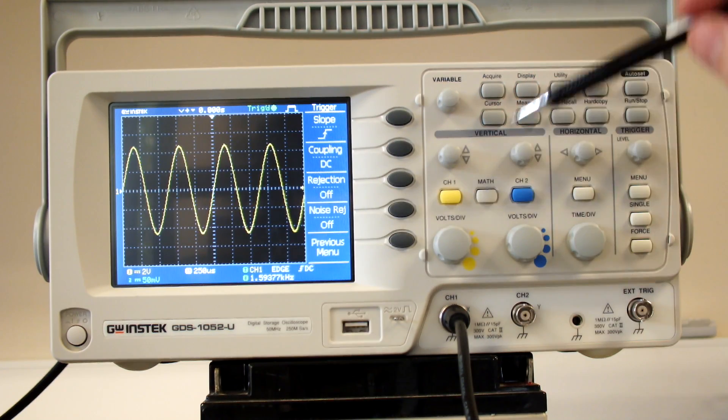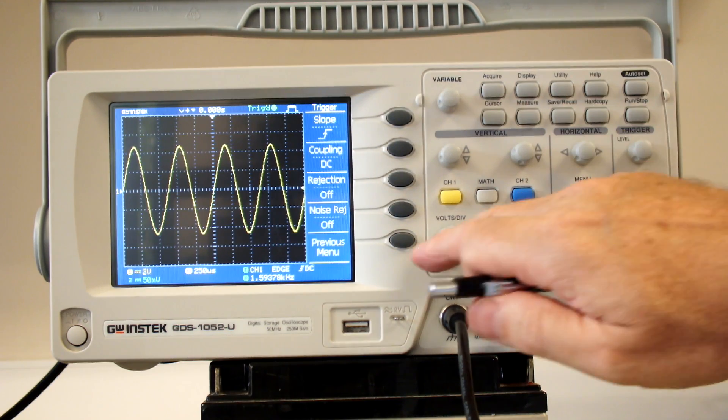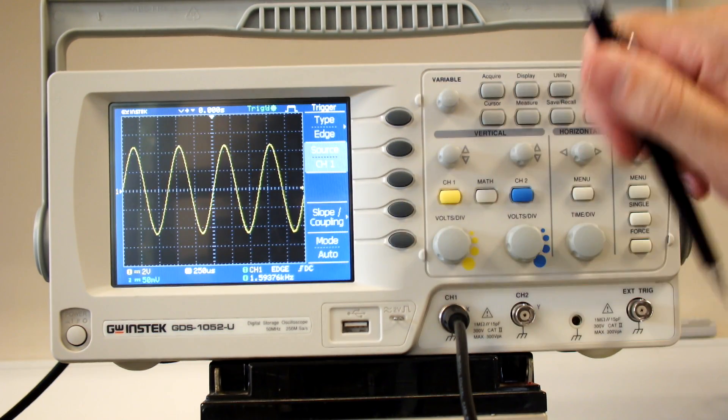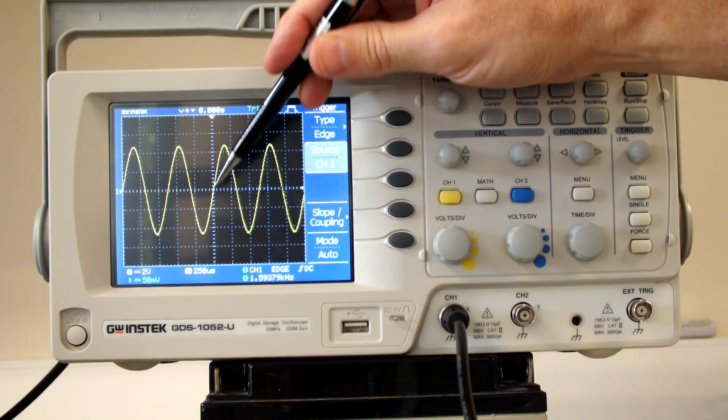If I say slope coupling, it's looking for the waveform going from negative to positive. This point here is my threshold point. It's looking for the waveform to go from negative to positive as it goes through that voltage. It triggers the wave.